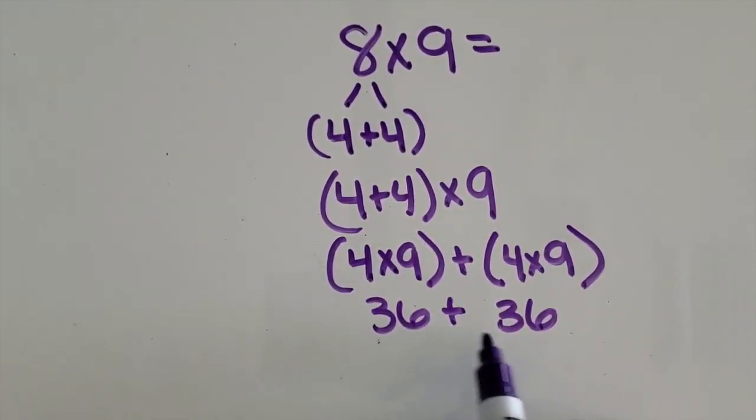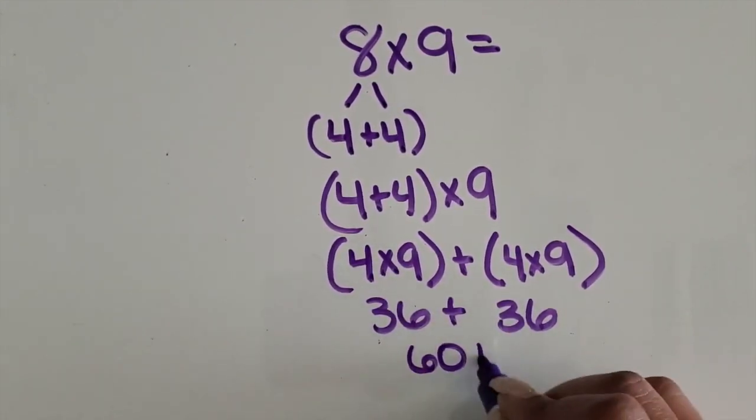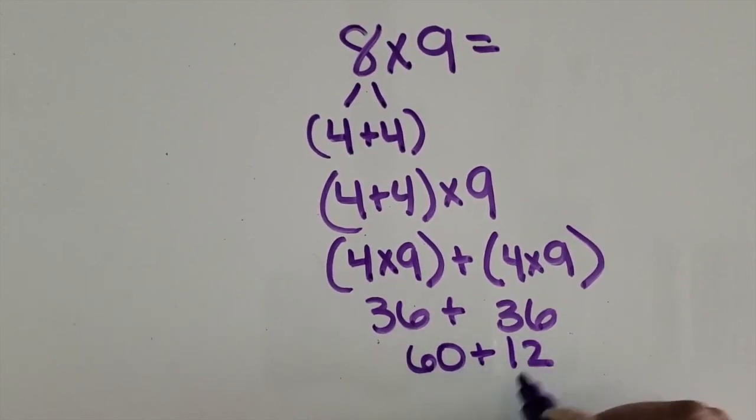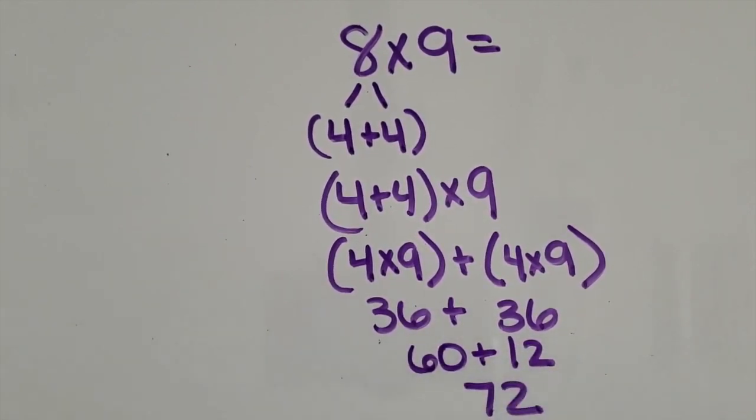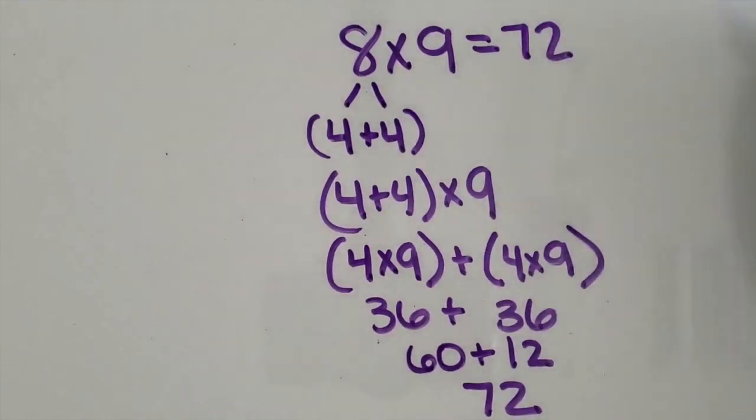I know 3 tens and 3 tens is 60. I know 6 ones and 6 ones is 12. 60 plus 12 is 72. So again, the product is 72.